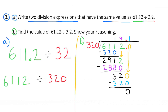How many times does 320 go into 2,912? 9 times 320 is 2,880, and the difference is 32. I make sure I put my decimal point, and I bring down a zero in the tenths column. How many times does 320 go into 320? Exactly one time. In the tenths place on top, I put a 1. 1 times 320 is 320, and the difference is 0. 6,112 divided by 320 is 19 and 1 tenth.